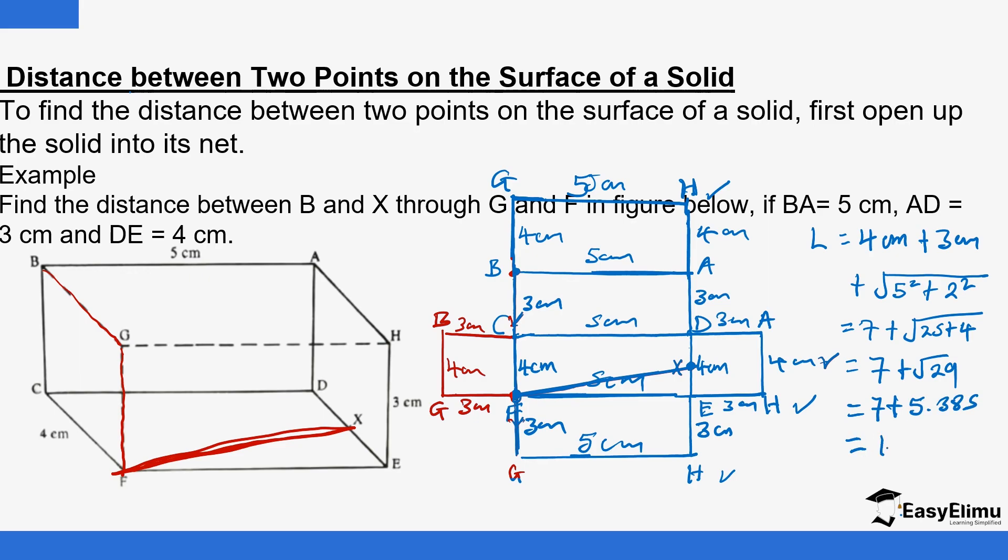So this is going to be 12.385 centimeters. So the net has only helped us to find the straight line between F and X. Otherwise you see you are moving from B to X via G and F. And you can see BG is 4 centimeters and then the height is 3. So it's just a matter of adding. So this straight line from F to X, that's what we have used the net to try and calculate.